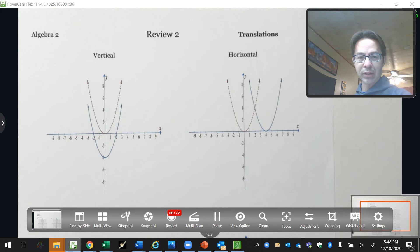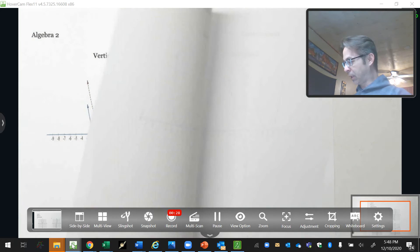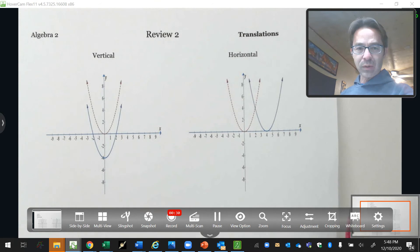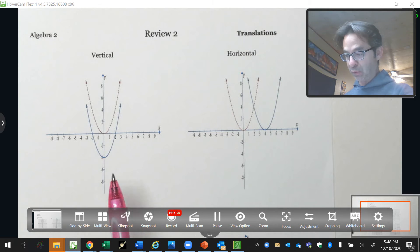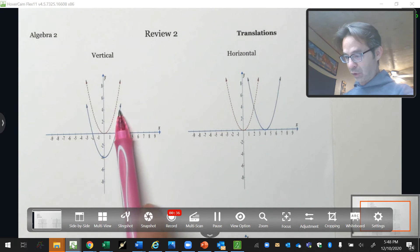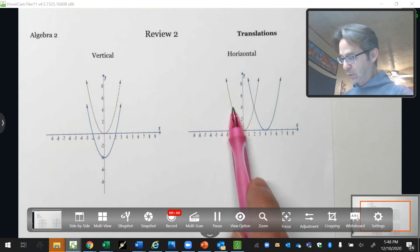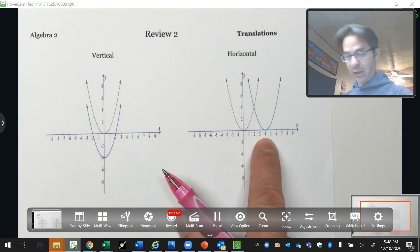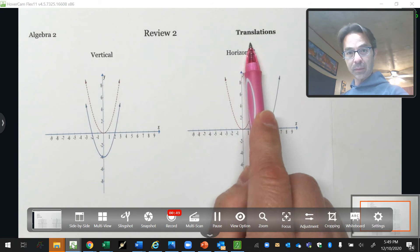So let's talk about how you know they're translations and not dilations. First of all, you know it's a translation because the shape itself did not change. It just moved locations. Here's the original one. It just moved down four spaces. Here's the original one. It just moved over four spaces. It looks exactly the same, except in a different location. That's what translation means.